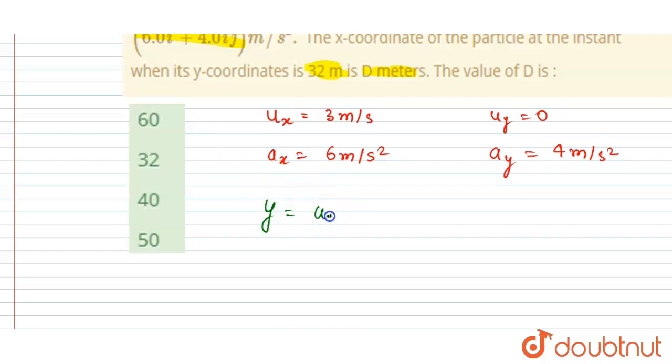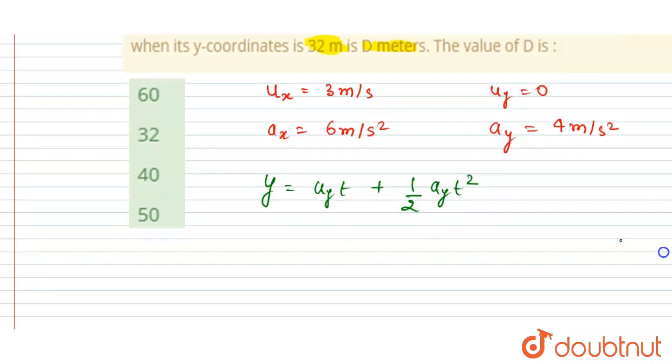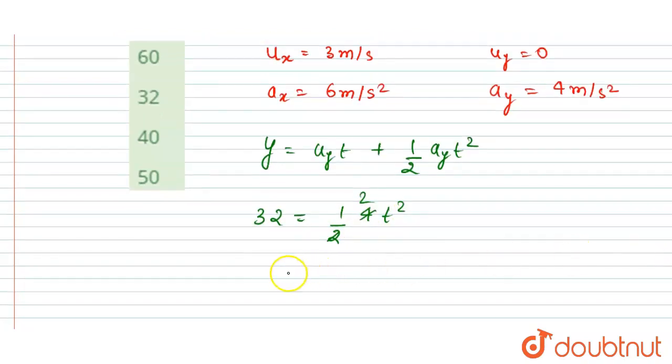So I will write y equals uy·t plus half ay·t². Right, so the y-coordinate is 32 and the y-direction acceleration is 4. And you can calculate the time now, so you will get t² equals 16, that is t equals 4 seconds.